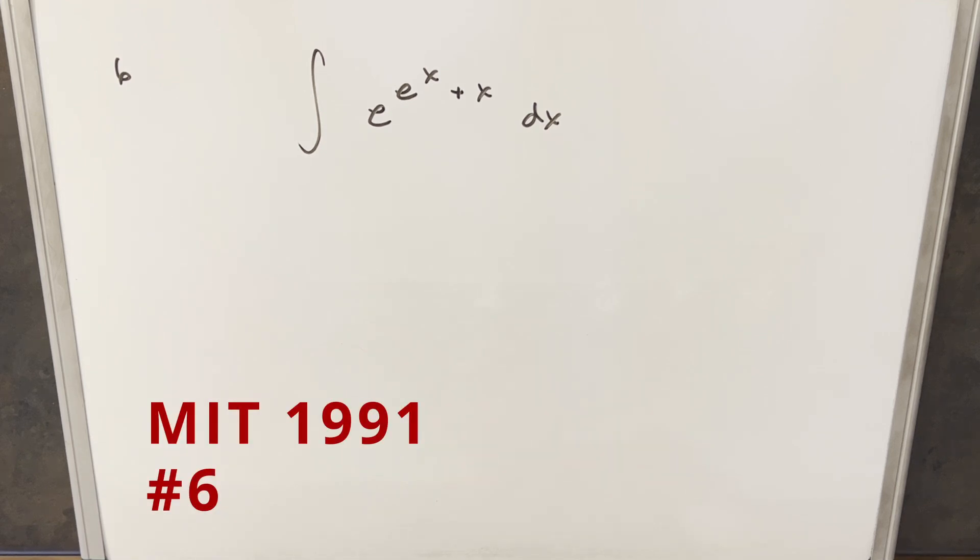Okay, we have your tiered-dollar integral from the MIT integration bee 1991. This one's problem six. We have the integral of e to the (e to the x plus x) dx.